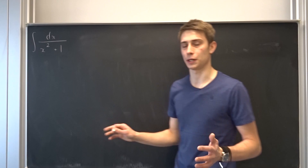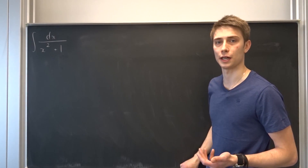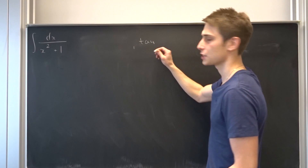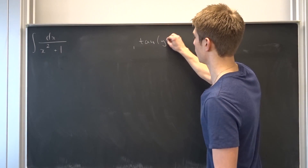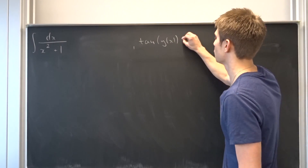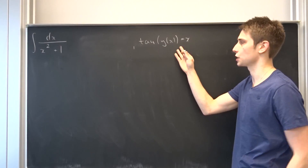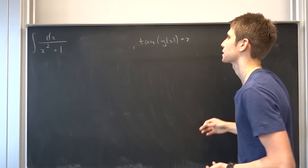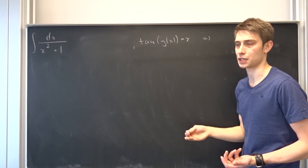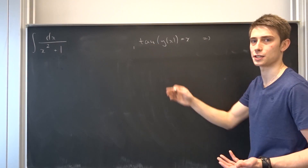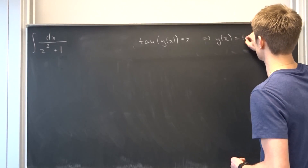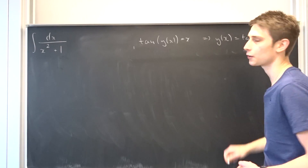We are going to start off with something completely different. We are going to take a look at the tangent. Imagine the tangent of some function y, where y is in terms of x. The tangent of some function is just equal to some constant x. Now we could use the inverse tangent on both sides, so the inverse tangent of the tangent is just the argument — that's y in terms of x equals the inverse tangent of x.